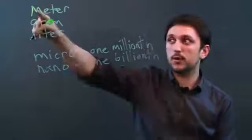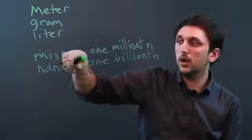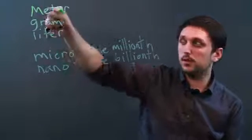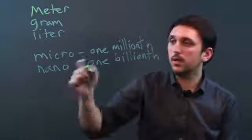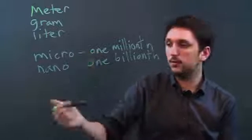So it doesn't matter if we're talking about micrometers or nanometers or micrograms or microliters. They both refer to how much of the liter or the gram or the meter. So if this is one millionth and this is one billionth, then they differ by a factor of 1,000.